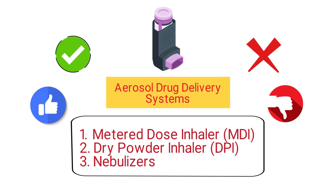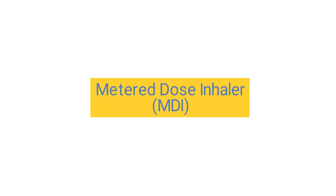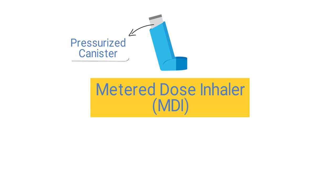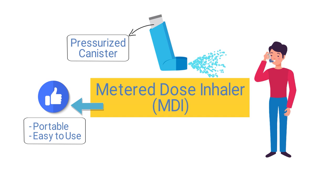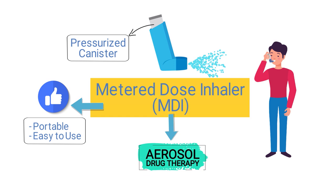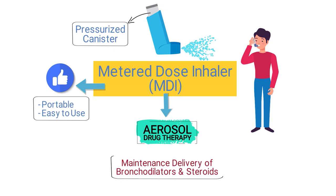First, let's talk about the metered dose inhaler, or MDI. A metered dose inhaler is a type of inhaler that uses a pressurized canister to deliver a specific amount of medication in aerosol form. The patient can activate the device while inhaling to receive a dose of the drug. One of the primary advantages is that they are portable, easy to use, and consistent in the amount of medication delivered with each inhalation. MDIs are the preferred aerosol delivery method for the maintenance delivery of bronchodilators and steroids in spontaneously breathing patients.